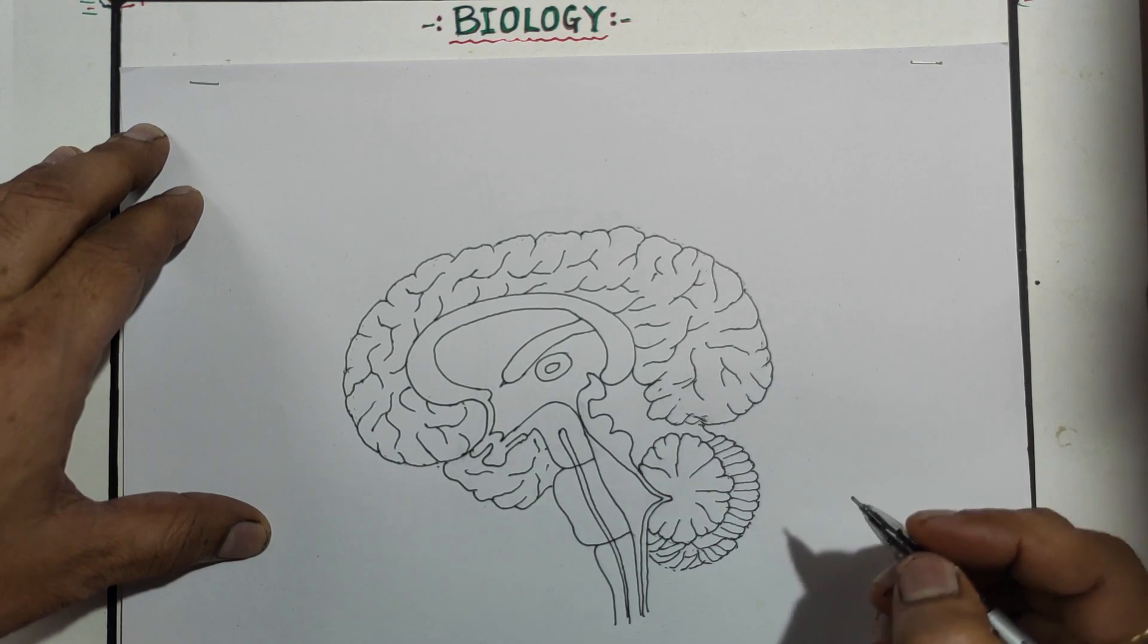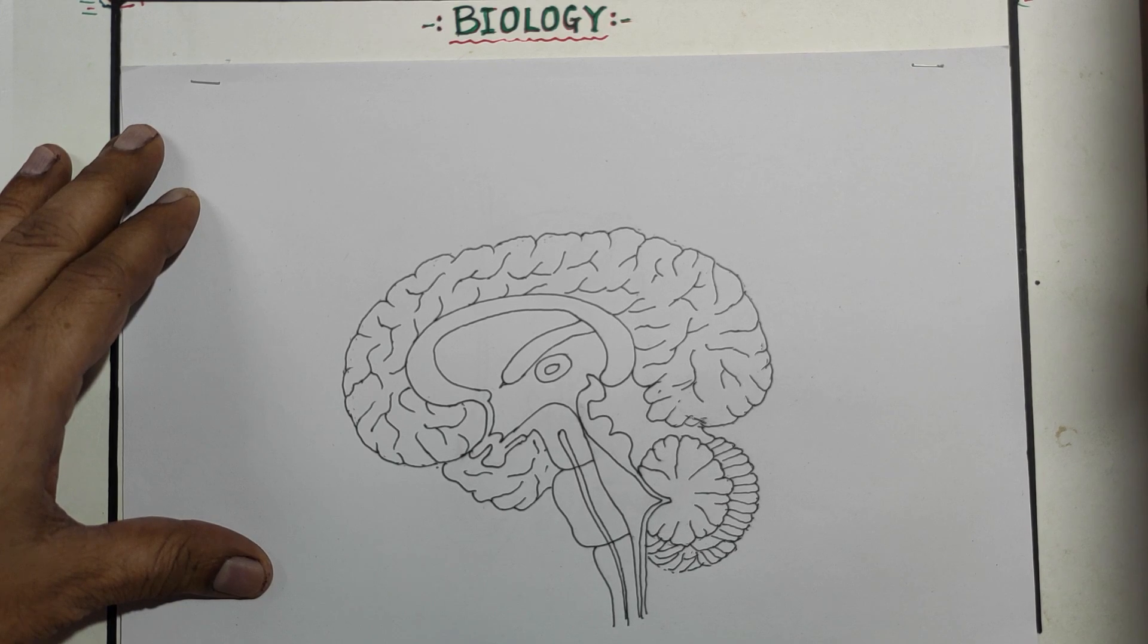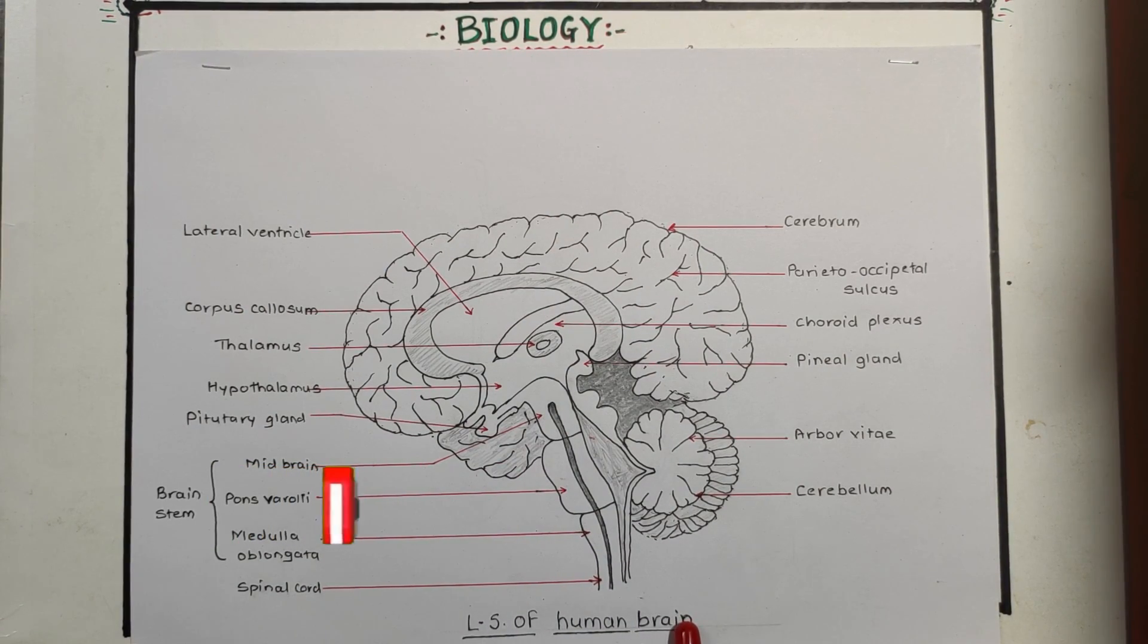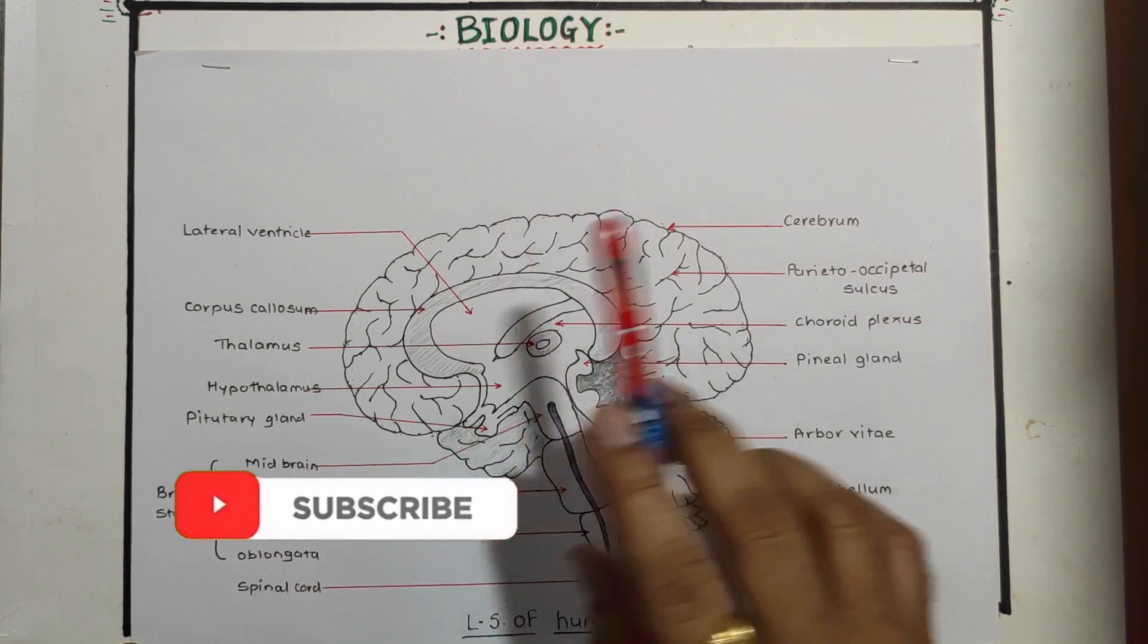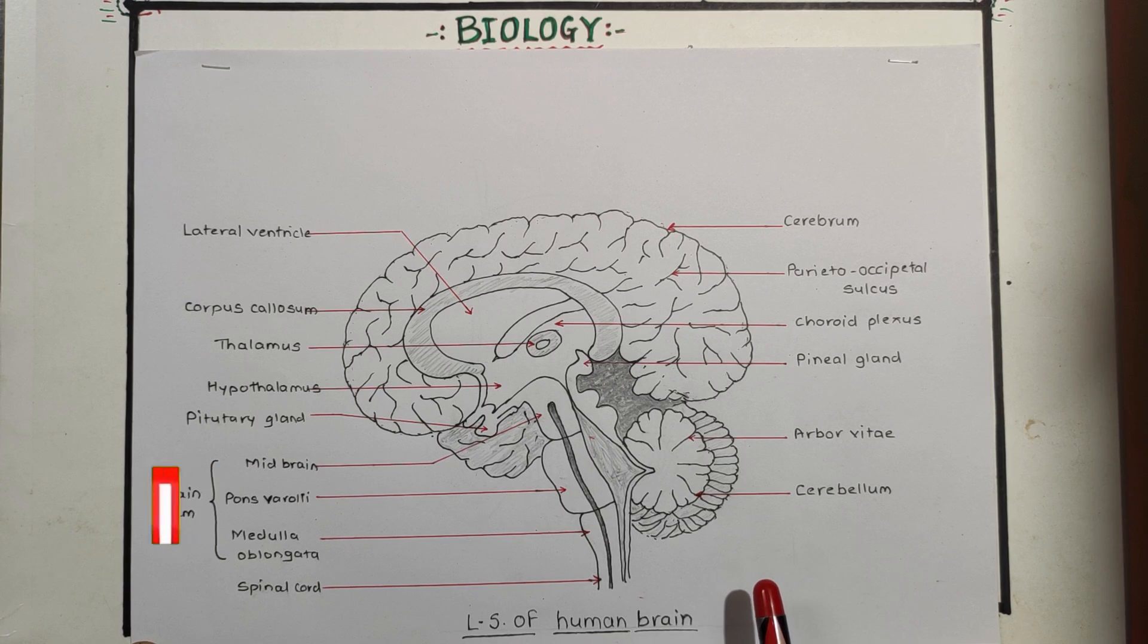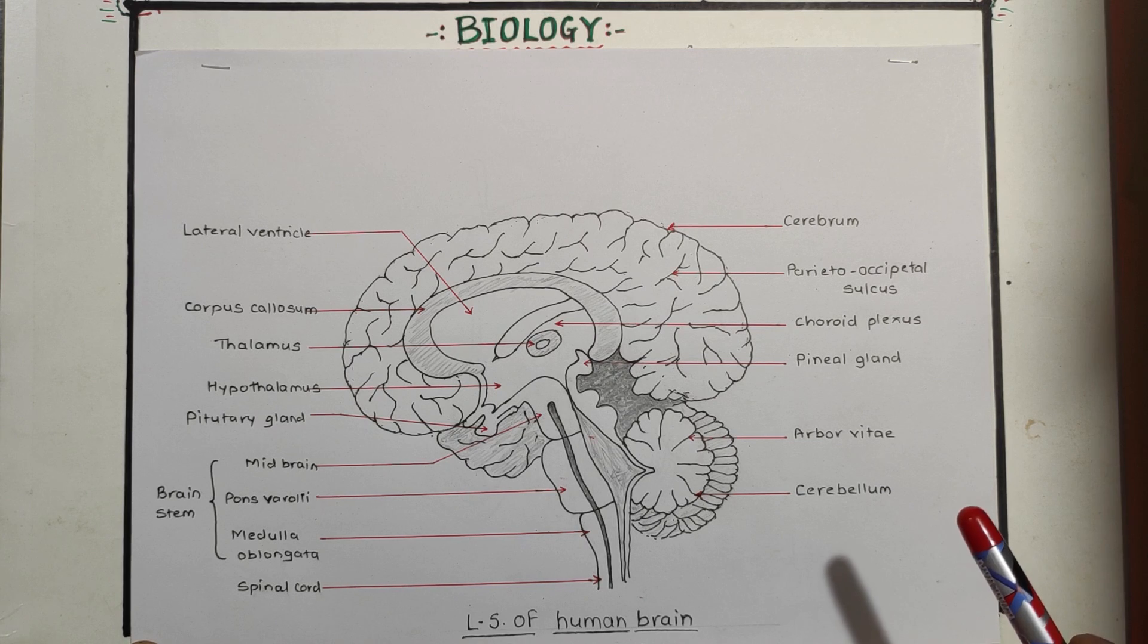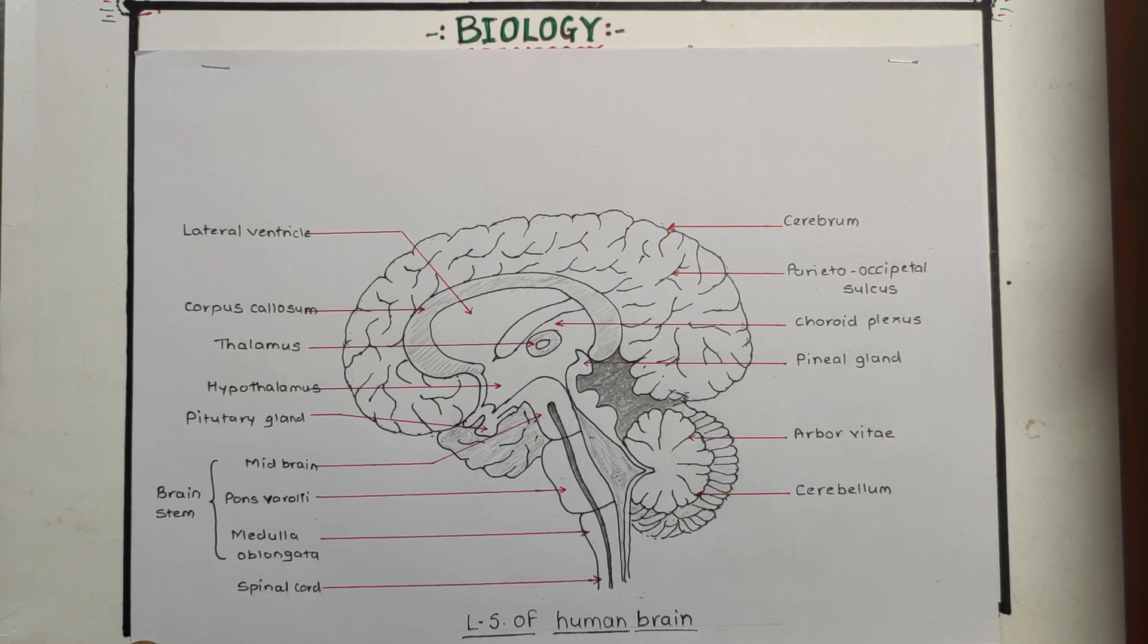So this is the complete structure of L.S. of human brain. So we have done this complete diagram of L.S. of human brain with the easy steps, okay, step by step. If you like my video, please subscribe and share with your friends and comment on the comment box. In the previous video, we are done about how to draw easily about the human heart. In the next video, we will see with some other diagrams. Thank you. Okay, so.